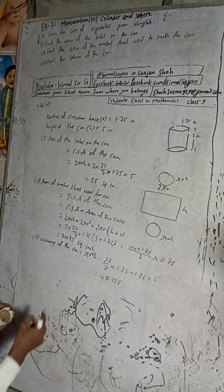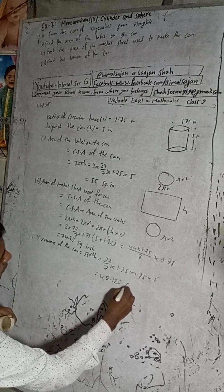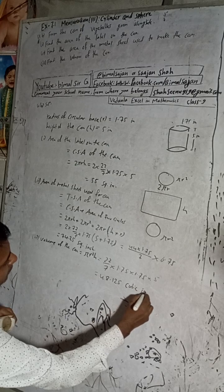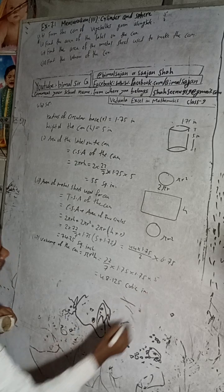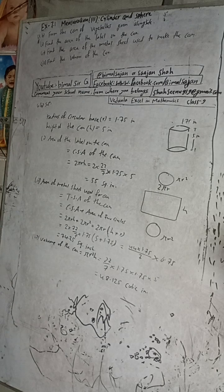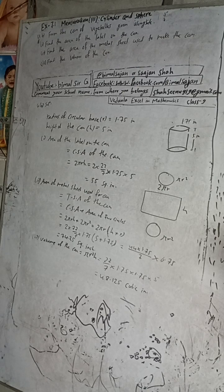So the volume is 48.125 cubic inches. These are the required solutions. The answers given in the book are 55, 74.25, and 48.125. Our answers match with the book. Correct!